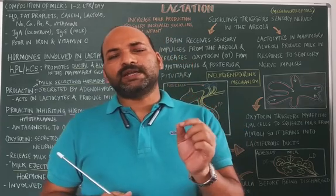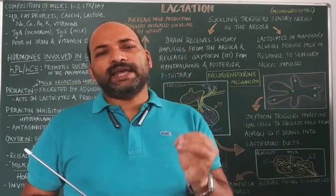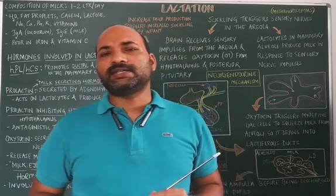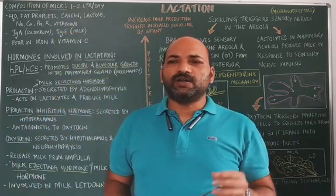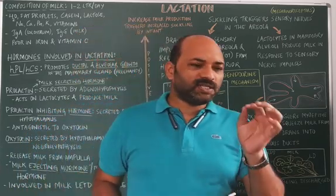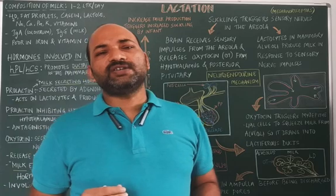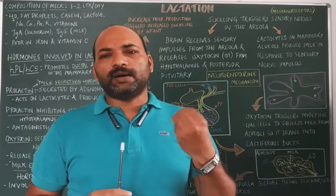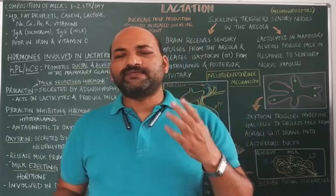Surrounding the nipple there is another circular structure called the areola. The areola consists of areolar glands which secrete a lipoid substance. This lipoid substance has a certain smell which attracts the suckling to suck the nipple. A second function of this lipoid fluid is that it moistens the nipple and prevents it from cracking during breastfeeding.